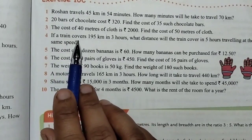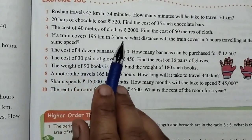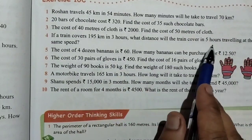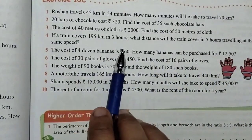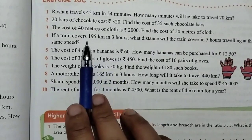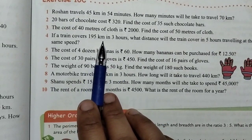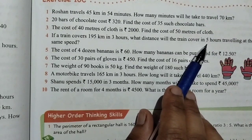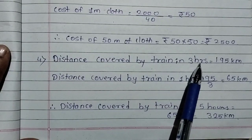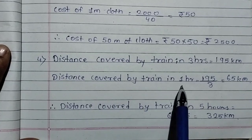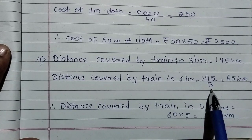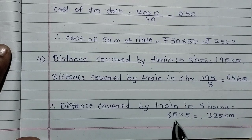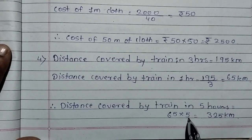Question number 4: If a train covers 195 km in 3 hours, what distance will the train cover in 5 hours travelling at the same speed? Distance covered in 3 hours is 195 km, so in 1 hour it covers 195 divided by 3, which equals 65 km. Then 65 multiplied by 5 gives 325 km.